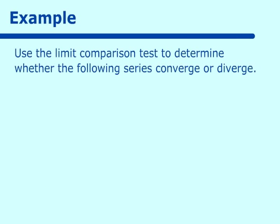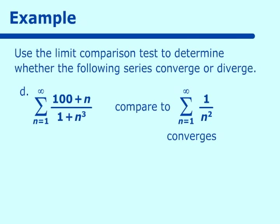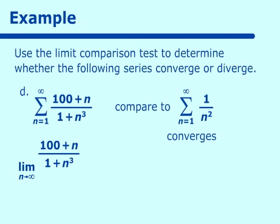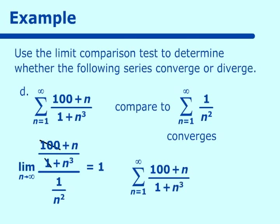How about (100 + n) over (1 + n cubed)? The 100 and the 1 don't matter so much, so we really have n over n cubed which is 1 over n squared. We compare it to 1 over n squared, which we know to be convergent. Taking the limit as n approaches infinity of (100+n)/(1+n³) over 1/n², the 100 and the 1 don't matter, and n over n cubed gives 1 over n squared over 1 over n squared, which is approximately equal to 1. So our series converges.